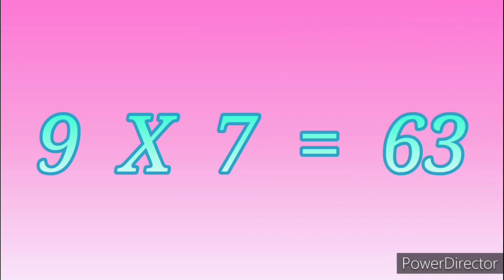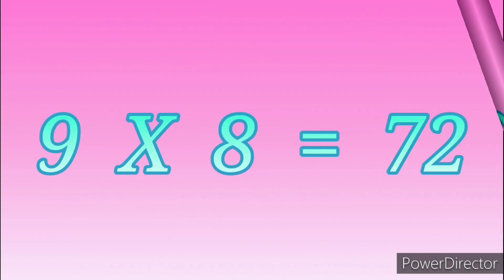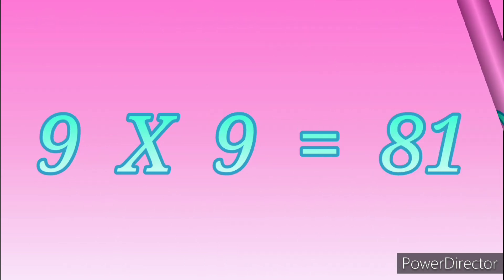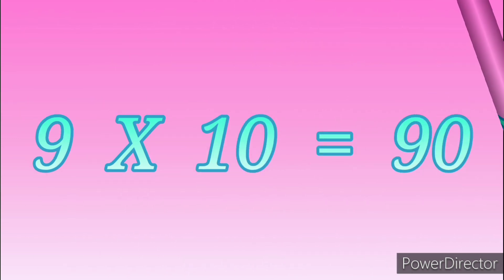Table of Nine. 9 sevens are 63. 9 eights are 72. 9 nines are 81. 9 tens are 90.